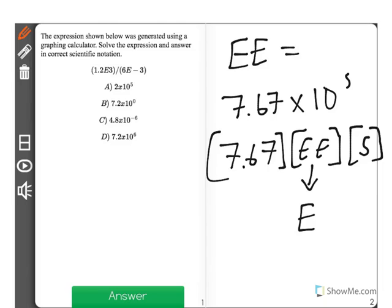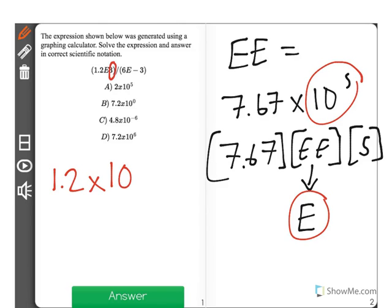You would type in 7.67 first, then you would press the ee button, then you would press 5. But what's important to note is when you press the ee button, it actually only writes e in the graphing calculator.